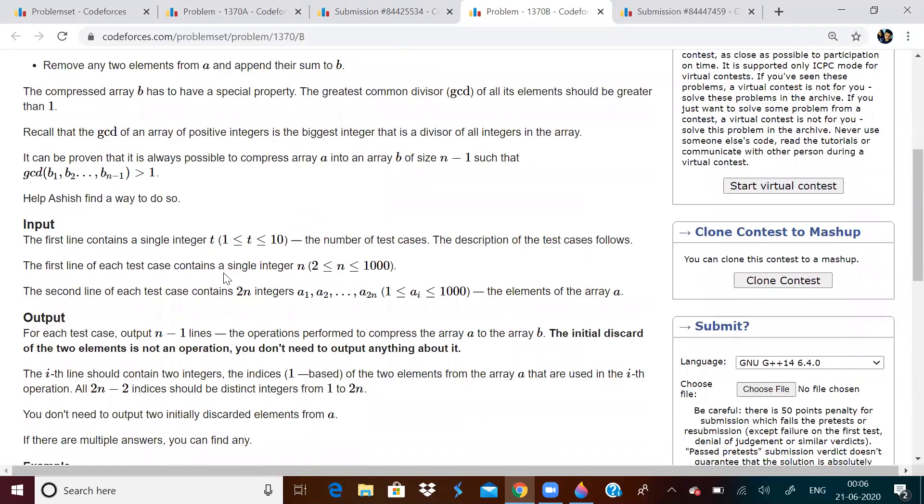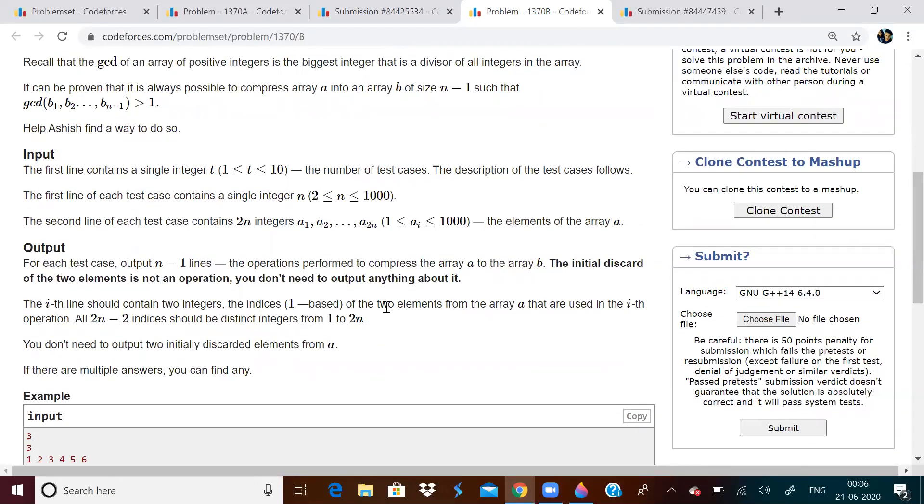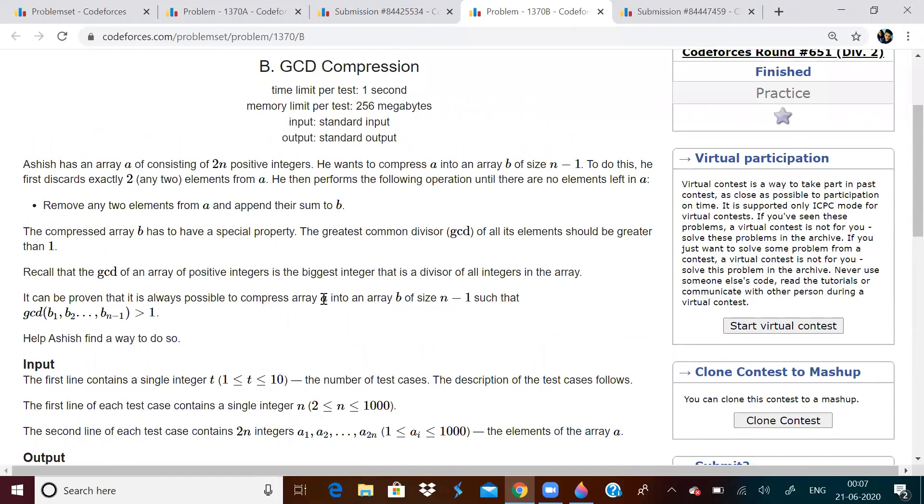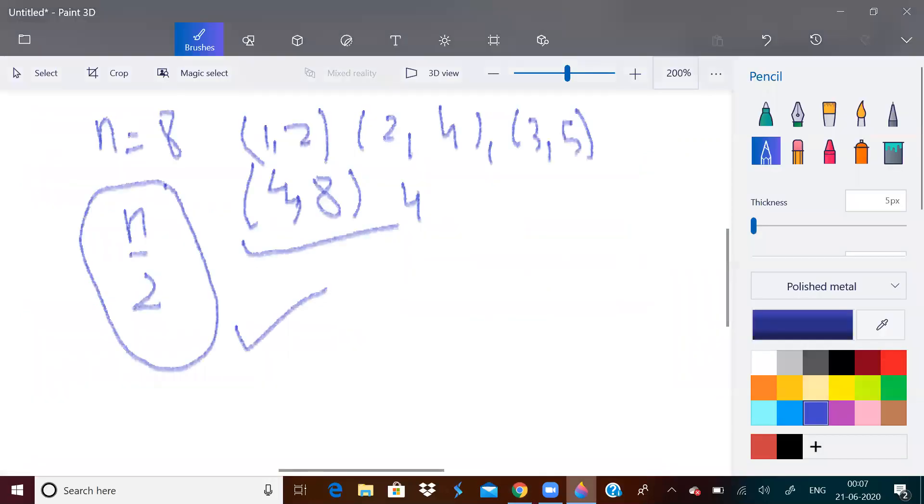But what do we have to do now? We have to output indices of the 2 elements that are used. We have to print n minus 1 lines. So what should we print? Basically, I don't want the GCD of array to be 1. The easiest thing to do is always try to make GCD of the array 2. How to make GCD of any array 2? If all the numbers are even.